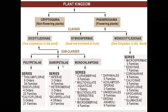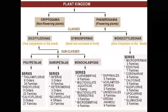The next subclass is gamopetale, classified into three series: inferae, heteromerae, and bicarpellatae. Gamopetale has flowers with both calyx and corolla, and the corolla is fused. The inferae series has epigynous flowers with an inferior ovary, many stamens, and petals alternate with stamens. The inferae series is classified into three orders and nine families. The heteromerae series shows hypogynous flowers; stamens are two or more, epipetalous or free from the corolla, and carpels are more than two. The heteromerae series is classified into three orders and twelve families.